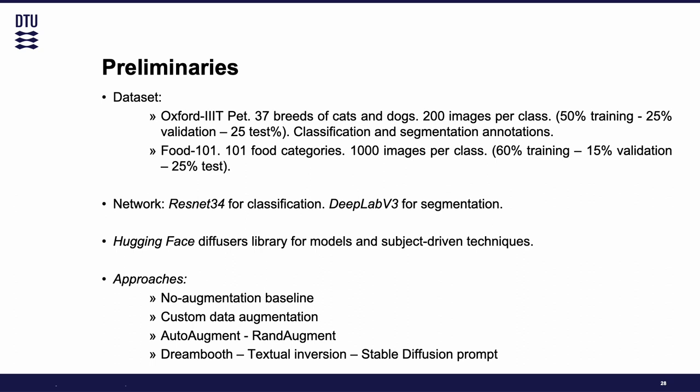The approaches we are going to use are: first, a no augmentation baseline as a common starting point for assessing the performance of other approaches; then custom data augmentation with classical techniques including horizontal flip, color jitter, Gaussian blur, and random rotation; automated augmentation policies like auto augment and RandAugment; and then our methods with Dreambooth, Textual Inversion, and Stable Diffusion prompt, which is the class name-based approach.